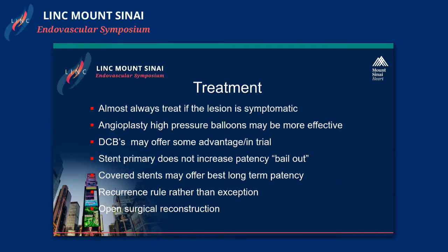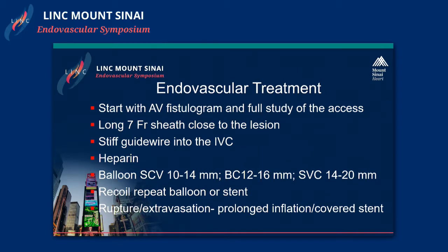In terms of endovascular treatment, start with an AV fistulogram and get a full study of the access — proximal, distal, arterial, etc. If a central venous lesion is present, a long sheath placed close to the lesion helps get good pictures pre and post. It helps to get a stiff guidewire into the IVC for good support. Heparin is usually given, and balloon sizes are provided as a guideline.